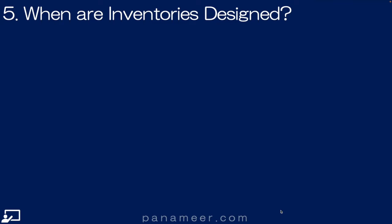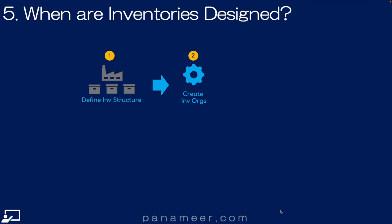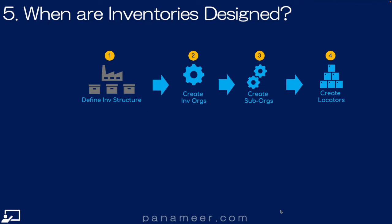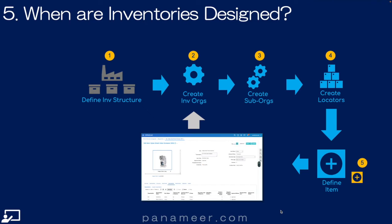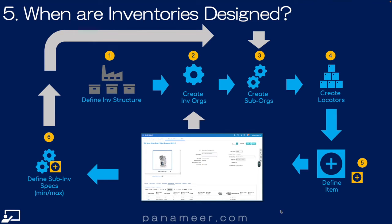Slide 5: When are they created? Let's walk through the six-step inventory design process flow. Step 1: Define the structure — this occurs outside of Cloud. Step 2: Add the inventory organizations. Step 3: Add the sub-inventories. Step 4, optionally, add the locators where these items are located. Step 5: Define the items associating with an inventory organization. Step 6: Add the item specs to the sub-inventories explaining how to process the item in that sub-inventory. As you can see, creating the locators occurs in the fourth step.